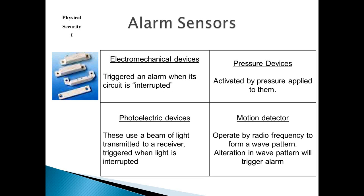Let's talk about some alarm sensors. We have electro-mechanical devices — the old balanced magnetic switches. Triggers an alarm when the circuit is interrupted. How those work is there are two magnets reading each other, and if they move too far apart, they no longer sense each other. That interrupts the balance mechanism inside the magnet and opens the circuit. When it's an open circuit, it sends an alarm to the control panel. You also have photoelectric devices. These use a beam of light, usually infrared, and whenever it's interrupted, you get an alarm.